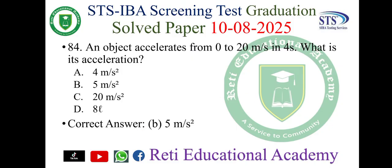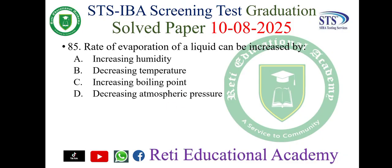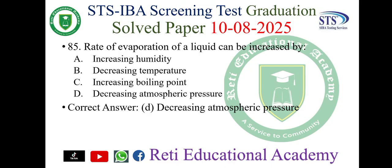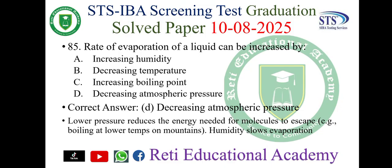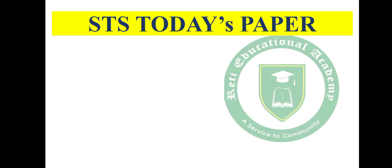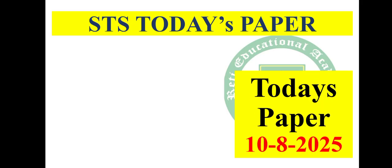Question number 85: The rate of evaporation of a liquid can be increased by A) increasing humidity, B) decreasing temperature, C) increasing boiling point, D) decreasing atmospheric pressure. The correct answer is D) decreasing atmospheric pressure. Lower pressure reduces the energy needed for molecules to escape — for example, boiling occurs at lower temperatures on mountains. Higher humidity slows evaporation. Please subscribe to the YouTube channel and follow us on Facebook, TikTok, and WhatsApp. Thank you.